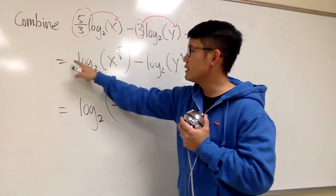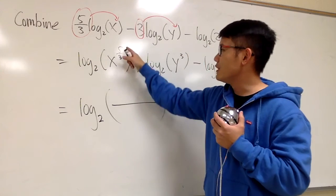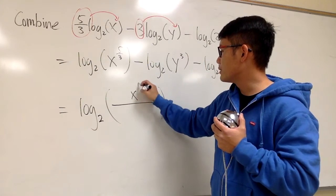So, first term, this is positive. This one, x to the 5 over 3 will go to the top. Let's put that down right here.